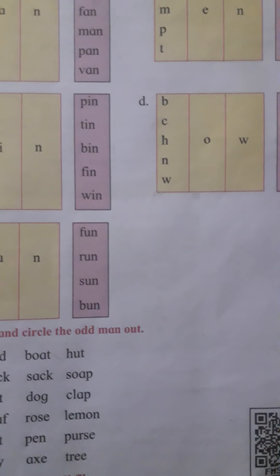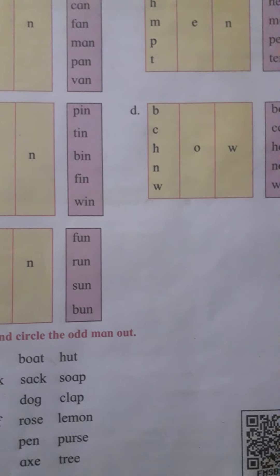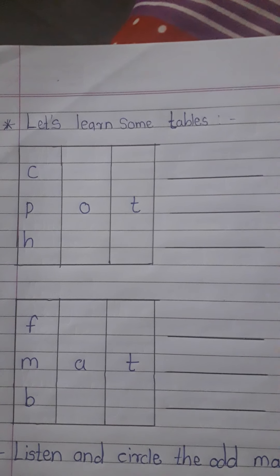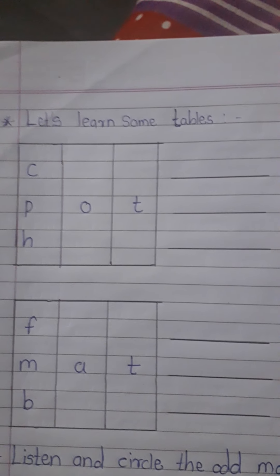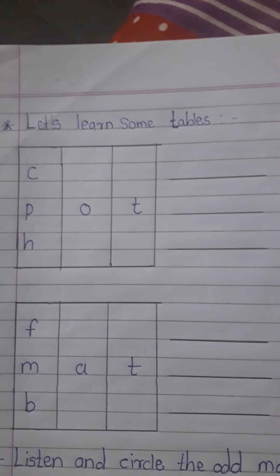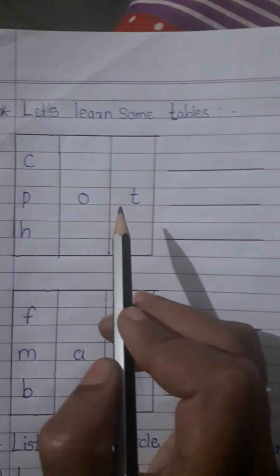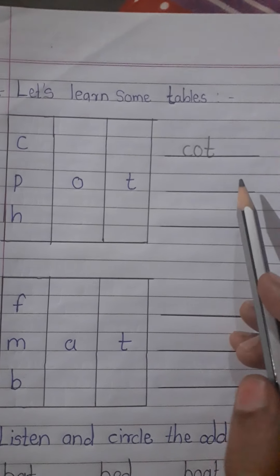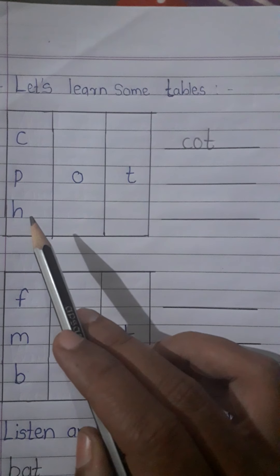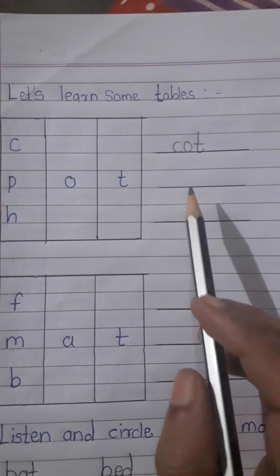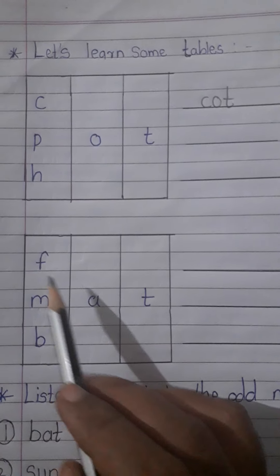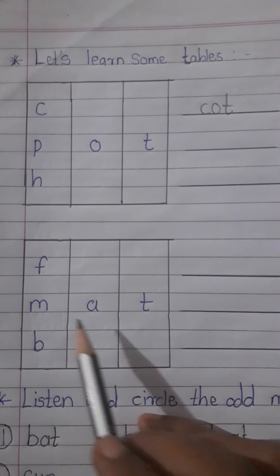Like this, you can use this method to solve the other tables. I have prepared some homework for you — these are also tables. You can follow the previous method to make or frame words. See: C-O-T cot, like this way you can use these letters and write the words. Next: F-A-T fat, M-A-T mat, B-A-T bat. Understood?